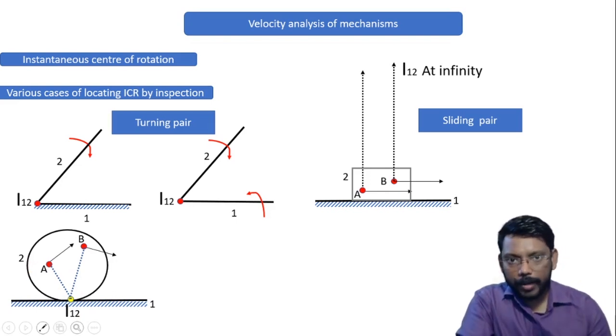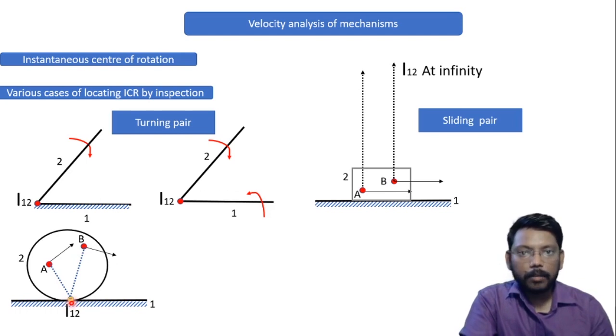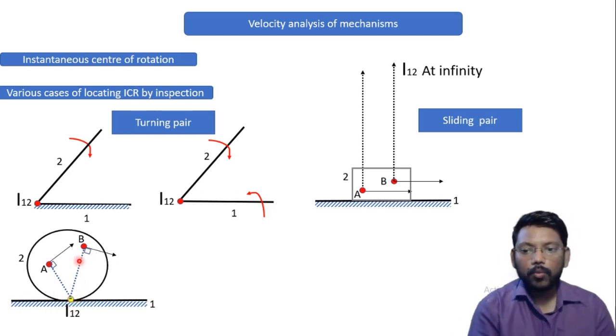So when you have a rolling pair, you have to see where is the point of contact with link number one, and that point will become the ICR. Simple. It becomes, because we can see these angles are always 90 degrees. So velocity and the radius has to be 90 degrees if they are moving in circle.